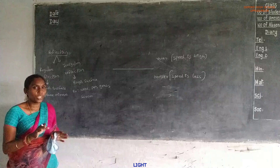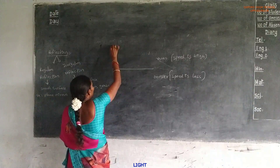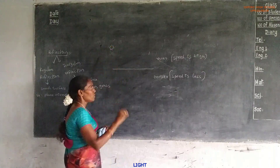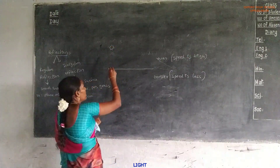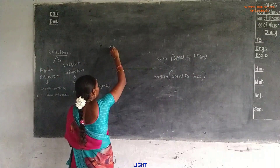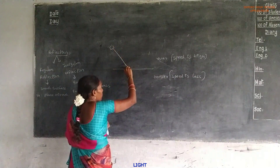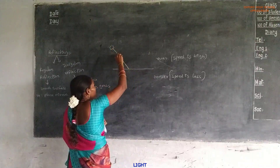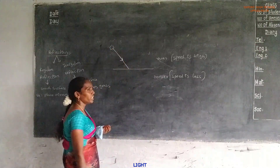The boundary separates the two media. For example, this is the sun. The sun always produces light energy. The light which comes from the sun and is incident on the surface — those light rays which are incident on the surface — that light ray is called the incident ray.